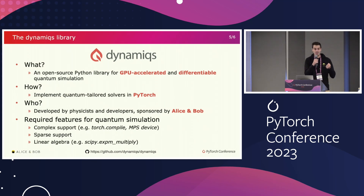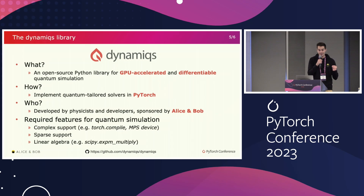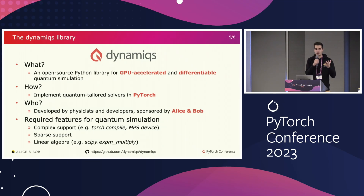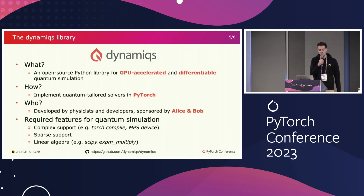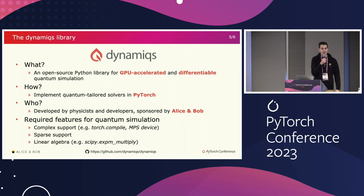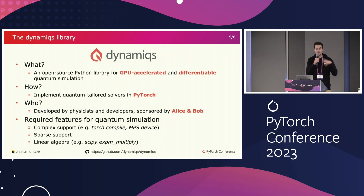I also came to you today because we have some specific needs for quantum system simulation. The first one is complex number support — nature dictates that we need to use complex numbers, so it would be amazing to see complex support in torch.compile or on MPS devices. A second feature would be support for sparse matrices, since the Hamiltonian represents physical interactions and is often very sparse. Finally, we'd love to see more support for certain linear algebra operations — for example, applying the exponential of a matrix to a vector directly.